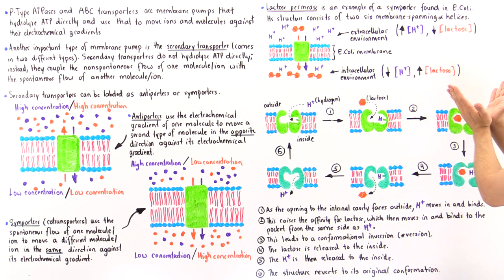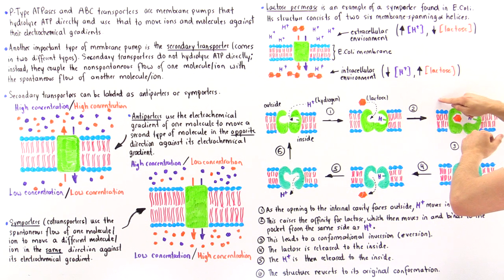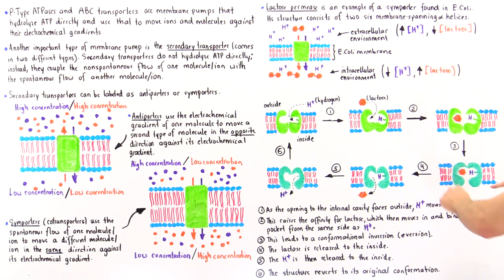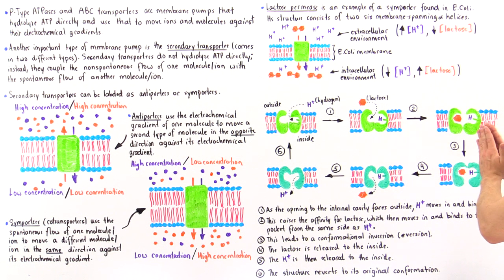Instead of opening to this side, the protein now opens to the other side — so this is the outside, and this is now the inside of the cell. In this state, the membrane protein is open to the inside.